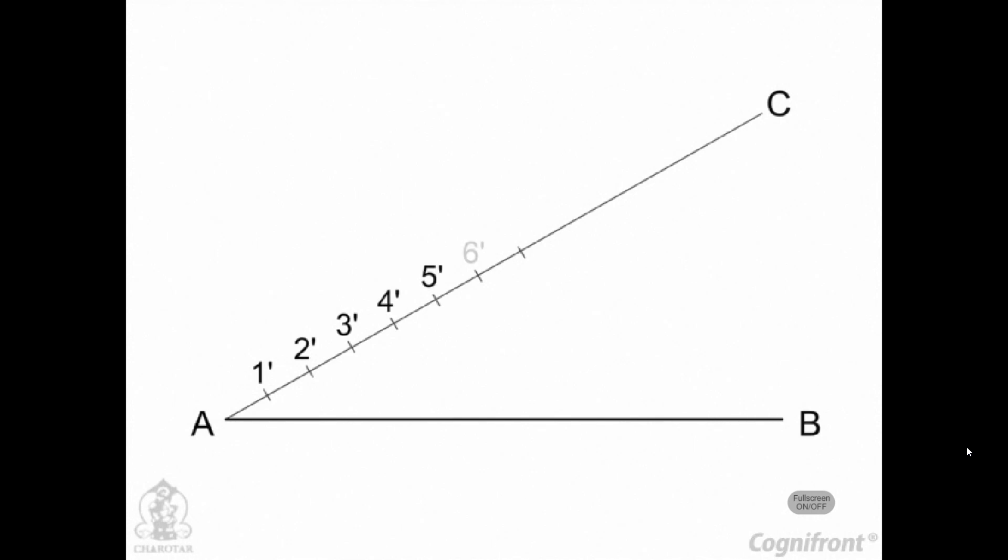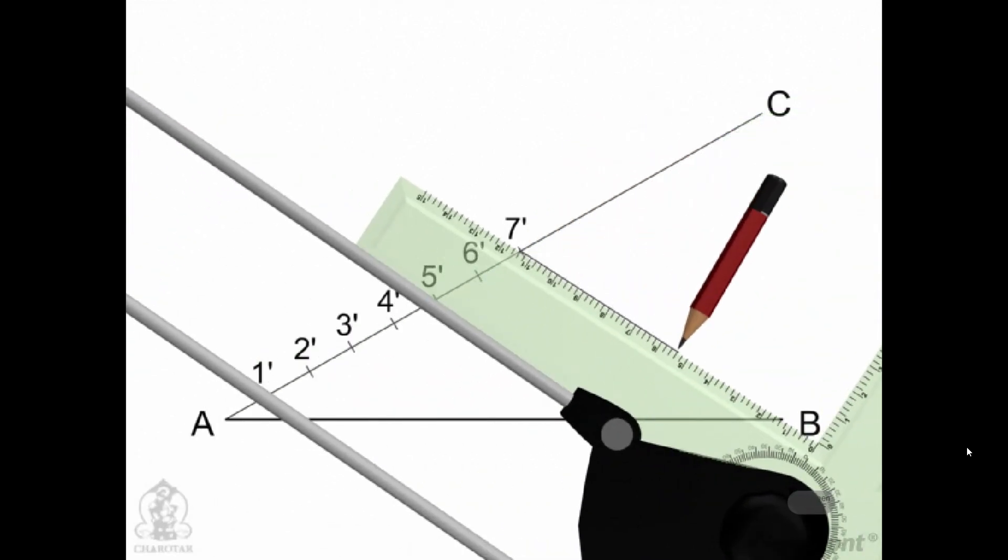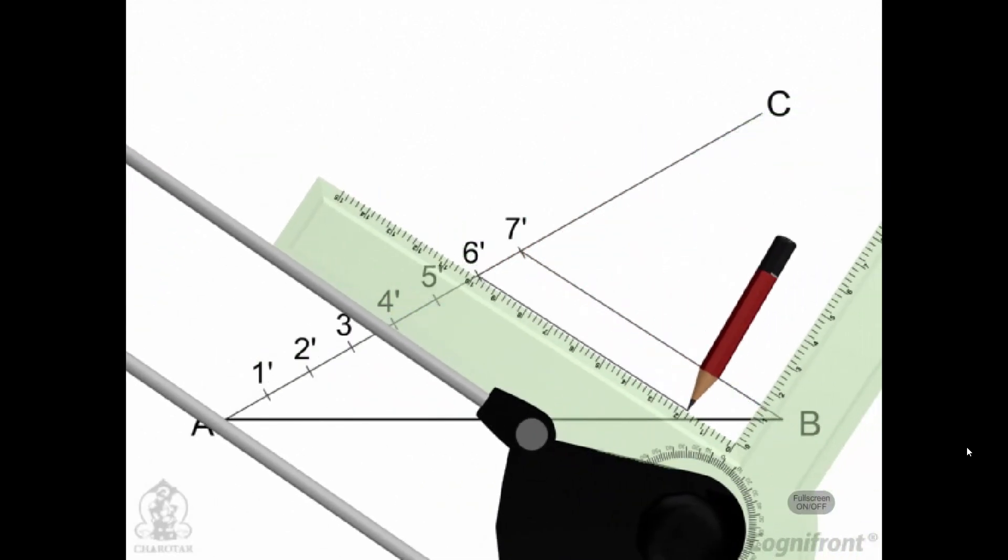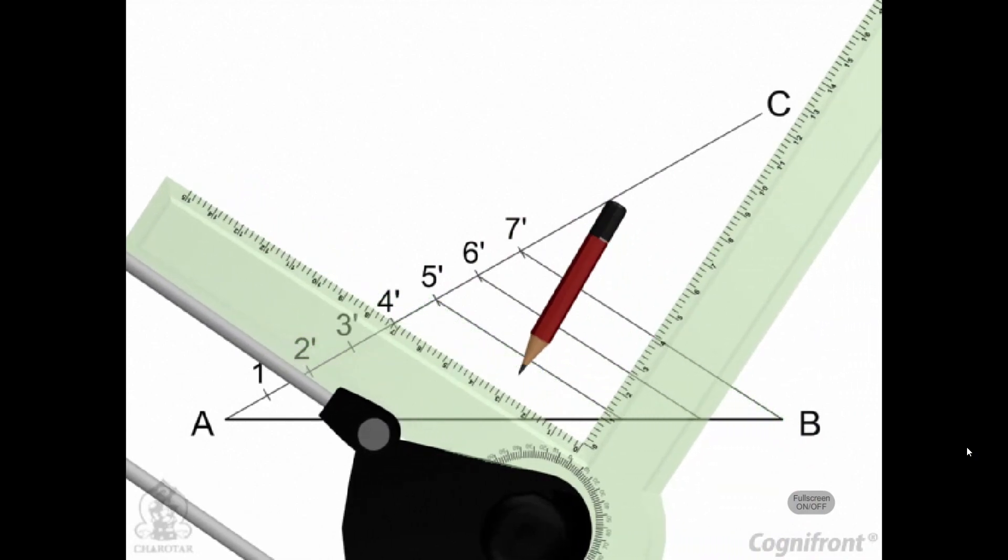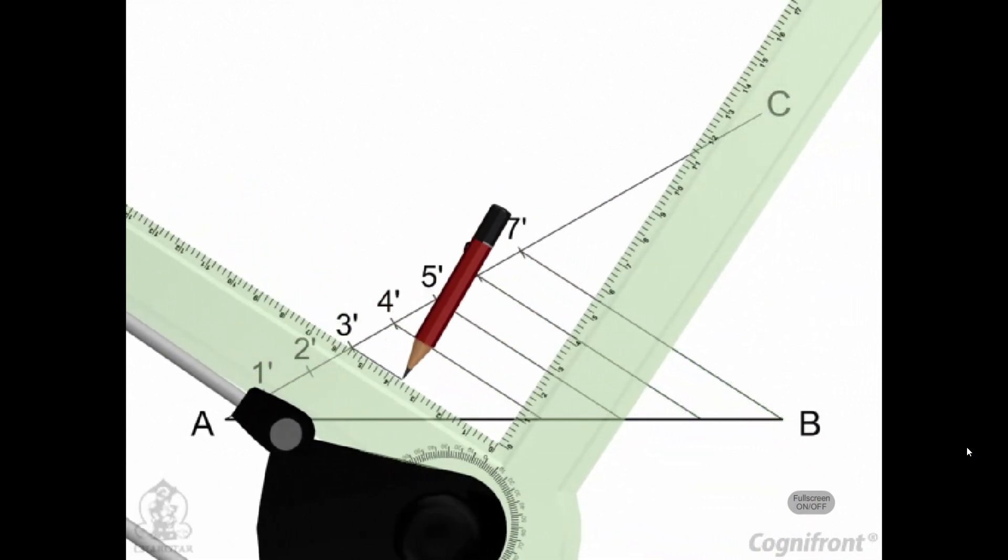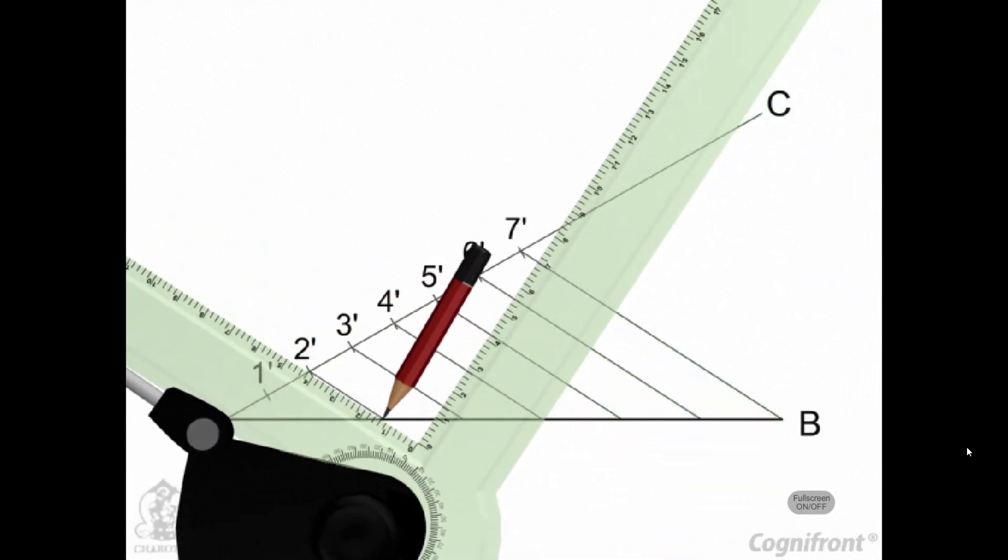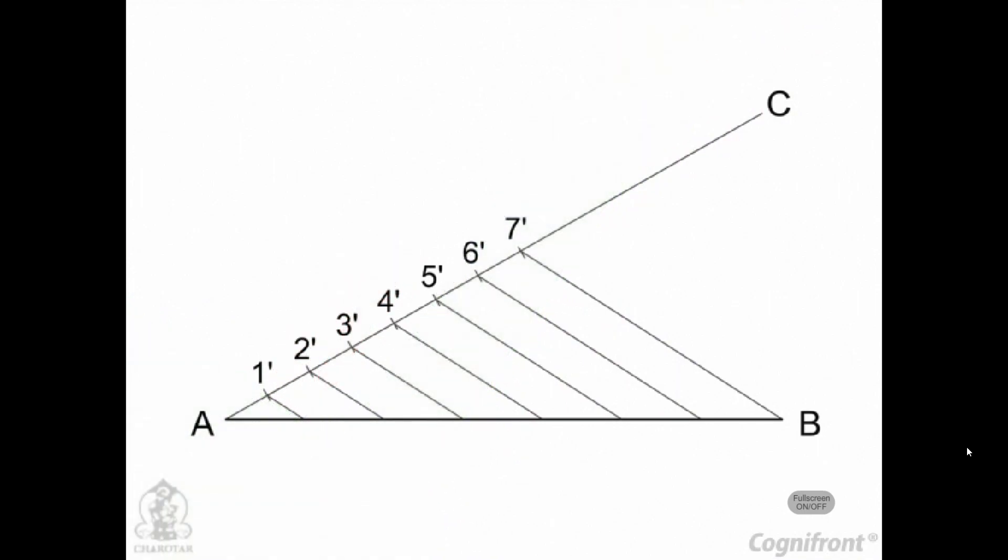Join point 7' with point B of line AB and draw lines parallel to 7'B, cutting line AB at points 6, 5, 4, 3, 2, and 1 respectively.